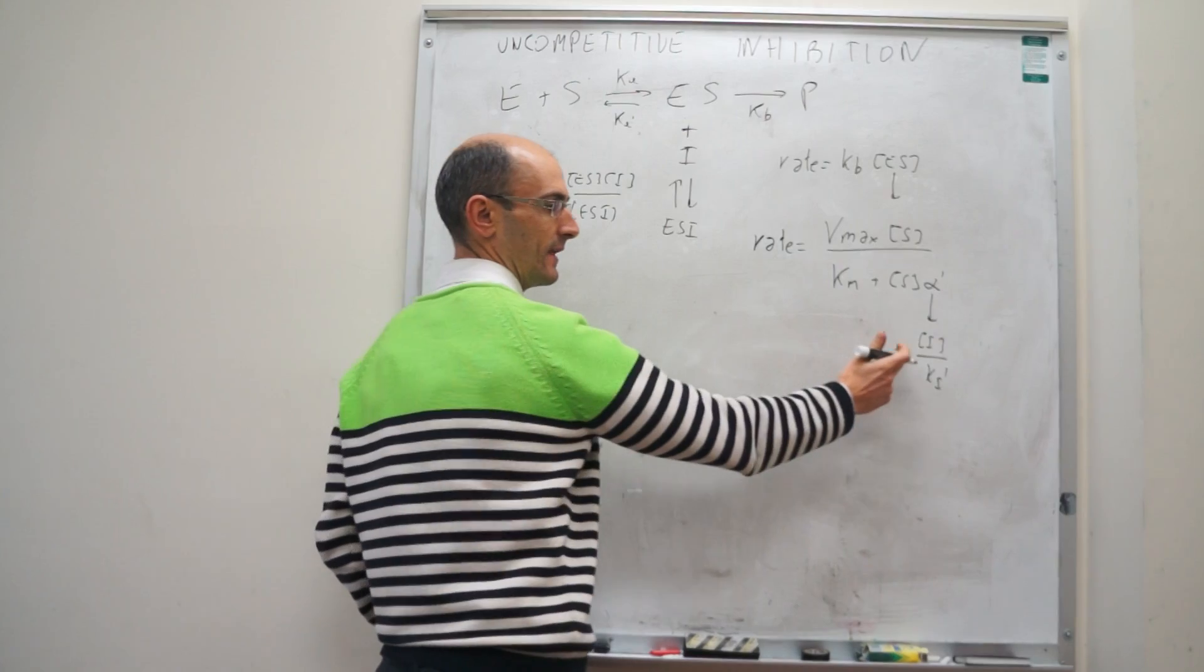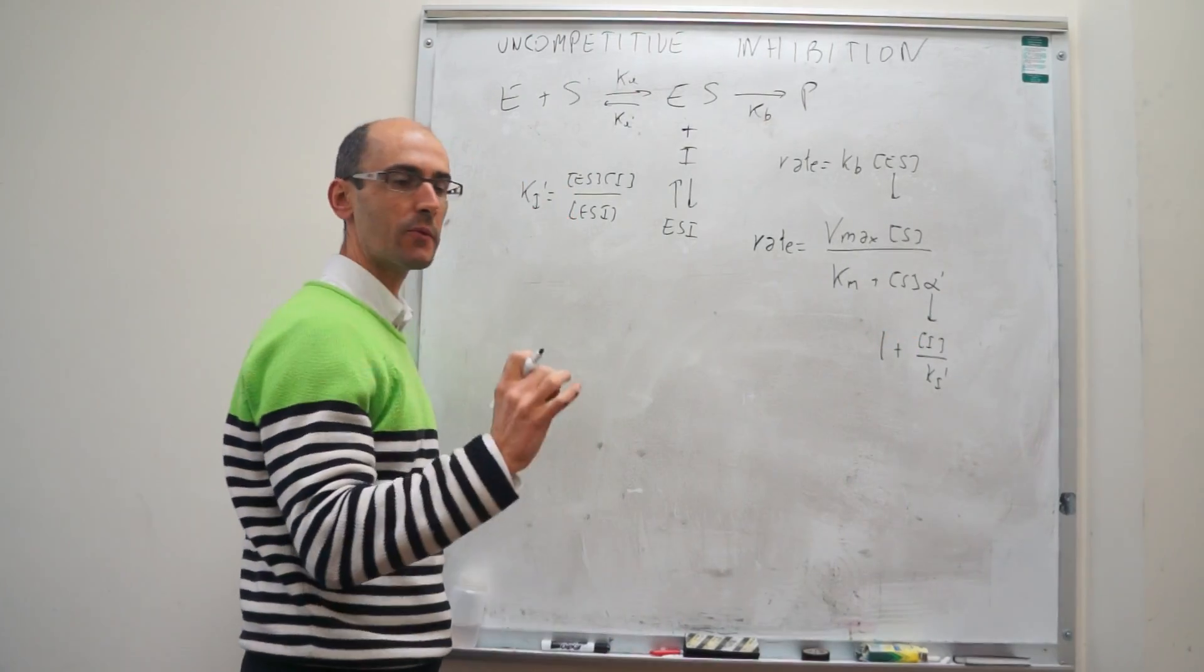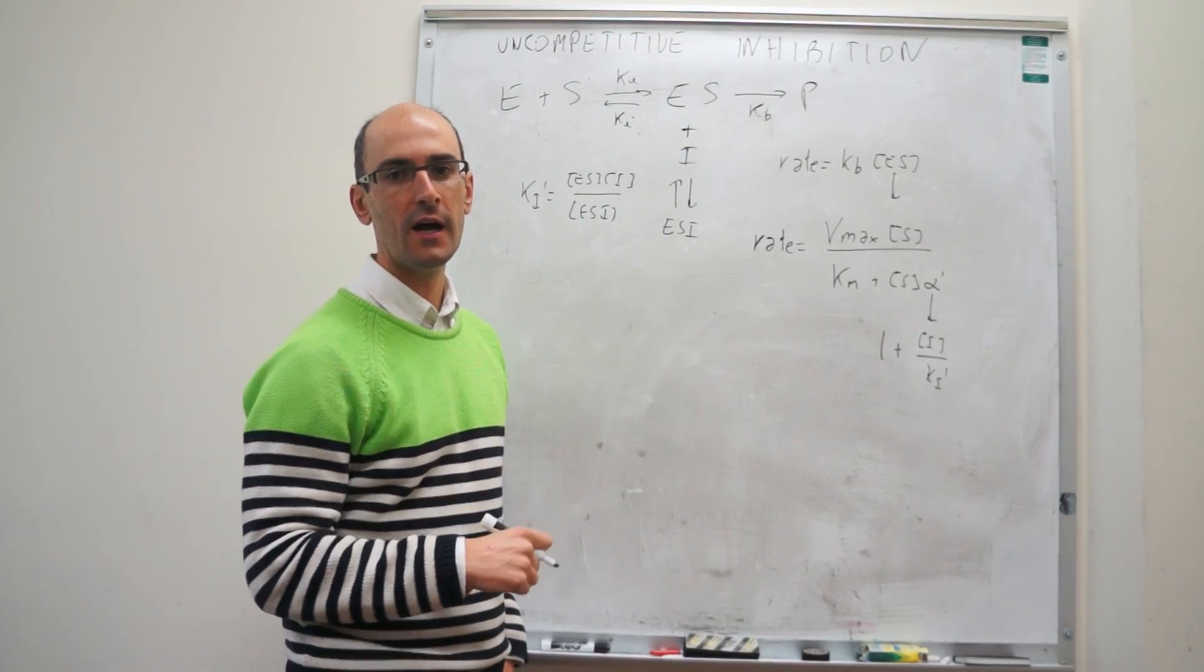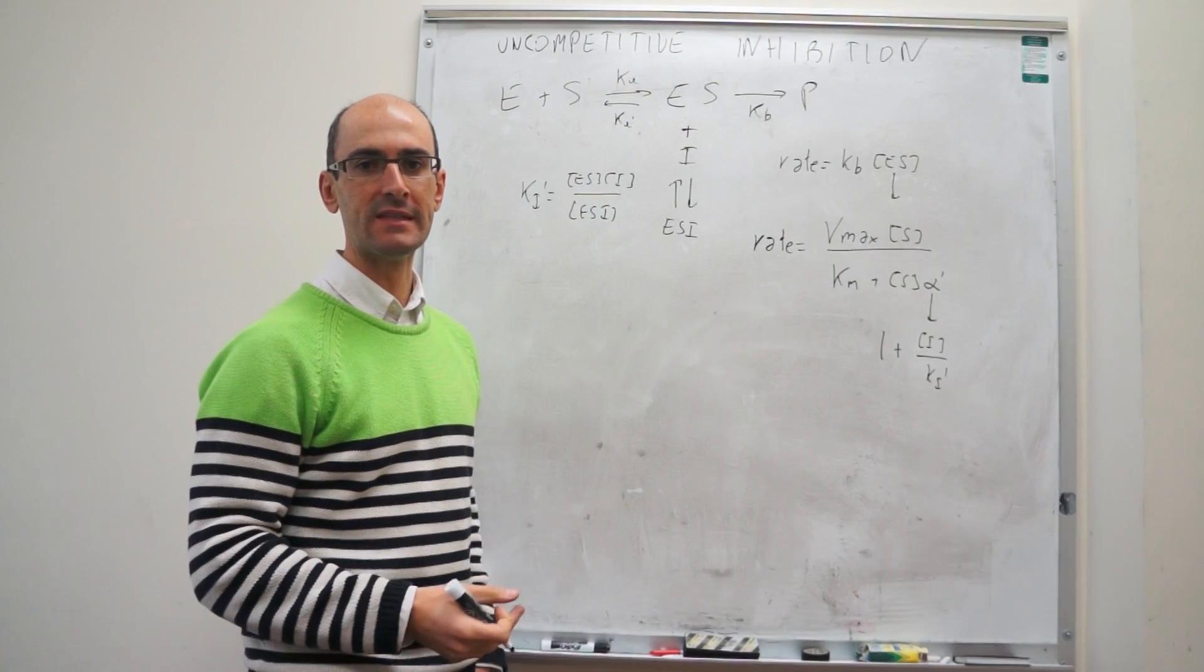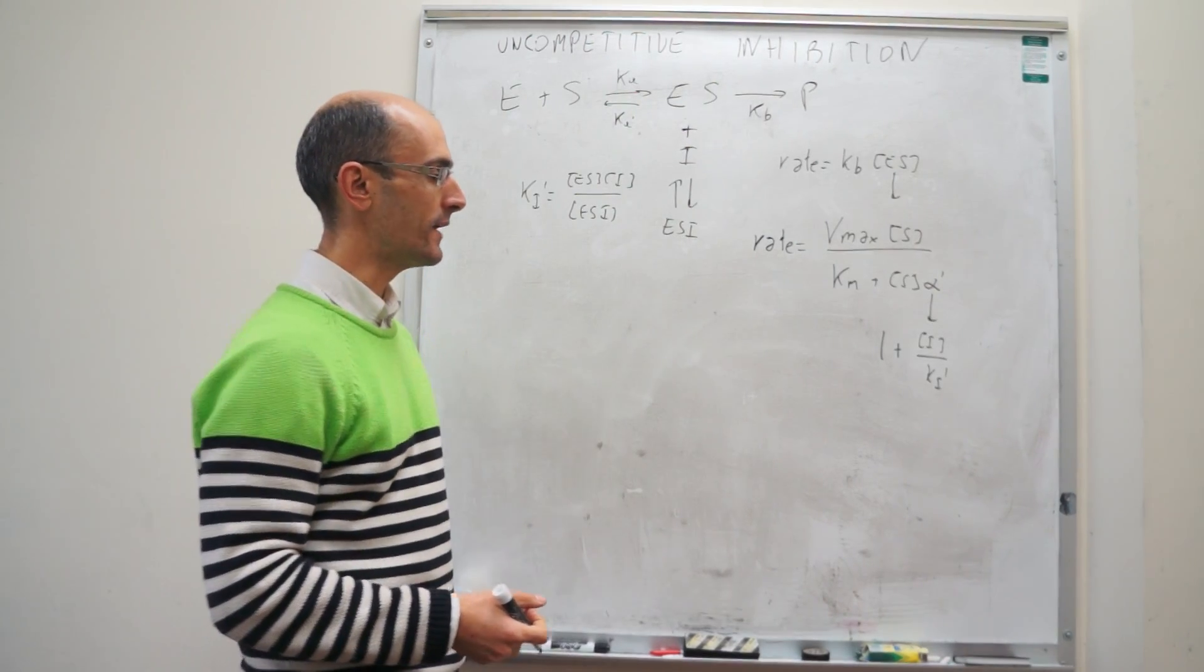Much as before, if the concentration of inhibitor is zero, then you recover the original Michaelis-Menten uninhibited rate.